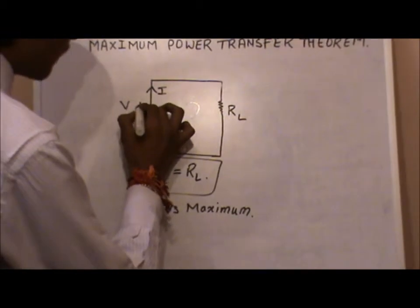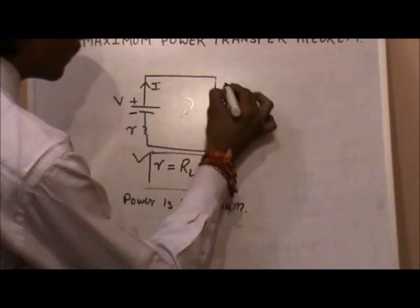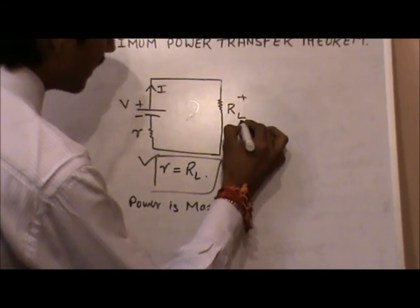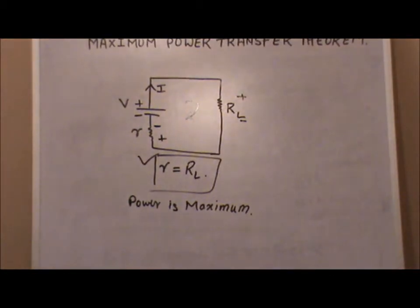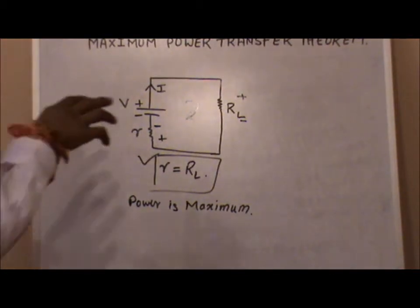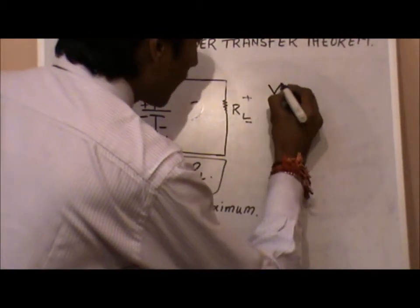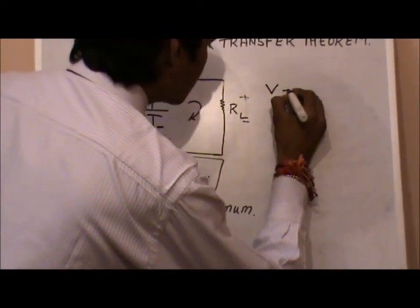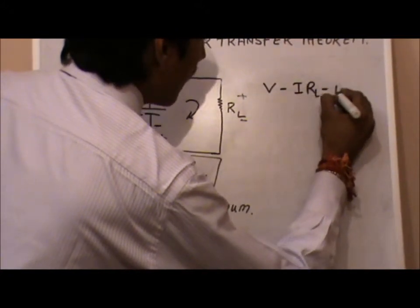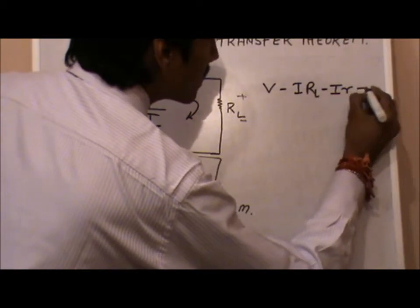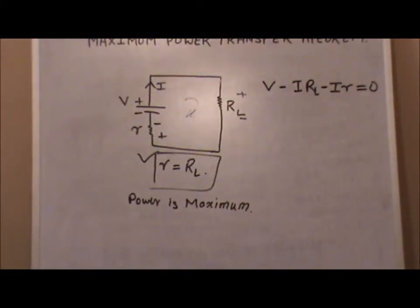There is a single loop and current is flowing in this direction. As per sign convention: this terminal is positive, this is negative, this is positive, this is negative. Simply applying Kirchhoff's Voltage Law in this particular loop, that will give us: V minus i·RL minus i·r equals zero.